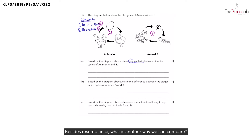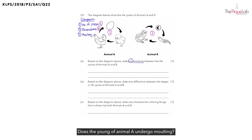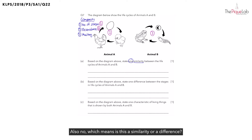Besides resemblance, what is another way we can compare? We can also compare based on whether the young undergoes molting. Does the young of animal A undergo molting? No. What about for animal B? Also no. Which means, is this a similarity or a difference? This will be a similarity between them.